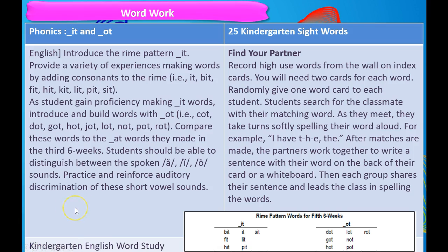Let's take a look at what your word work might look like. In English, you're going to introduce the rhyme pattern of -it and -ought and be able to practice them. Kids are supposed to practice and reinforce auditory discrimination with short vowel sounds. One of the things with sight words is an activity called Find Your Partner — you can see it written out in the overview. You'll also see the rhyme patterns for the 5th and 6th weeks from the English word study.